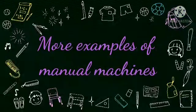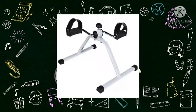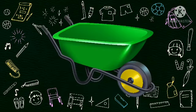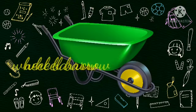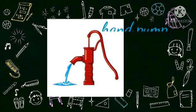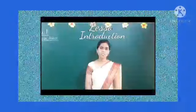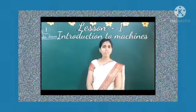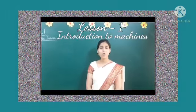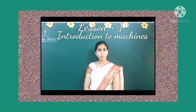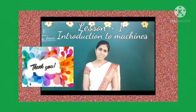Now students, let's see some more examples of manual machines. The first one is bicycle, then exerciser, then wheelbarrow, and then hand pump. All these machines are manual machines because they work on human power. I hope by now you all have understood what are manual machines. Thank you students.